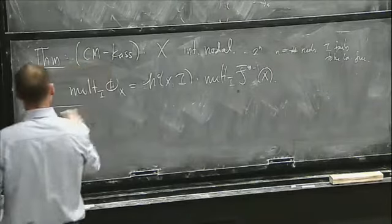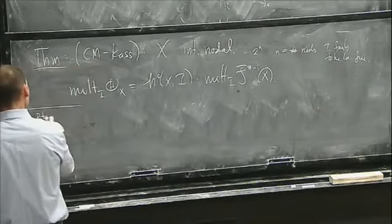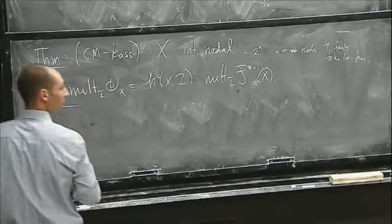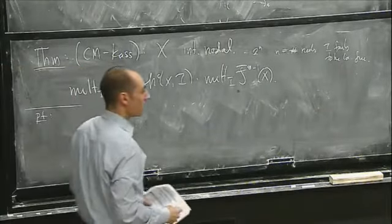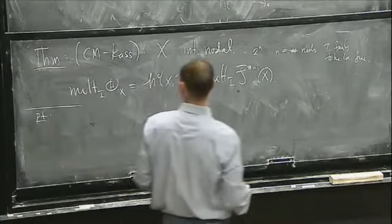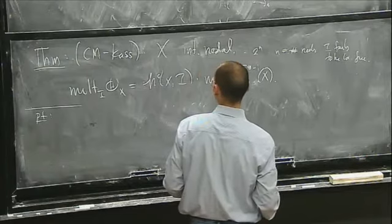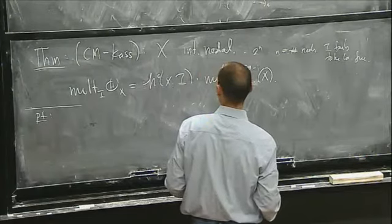There's a contribution from the ambient singularity. Essentially what this is saying is that you have some Cartier divisor being cut by some function, cutting out on this space something transverse to the tangent cones — so you're getting exactly what you expect.